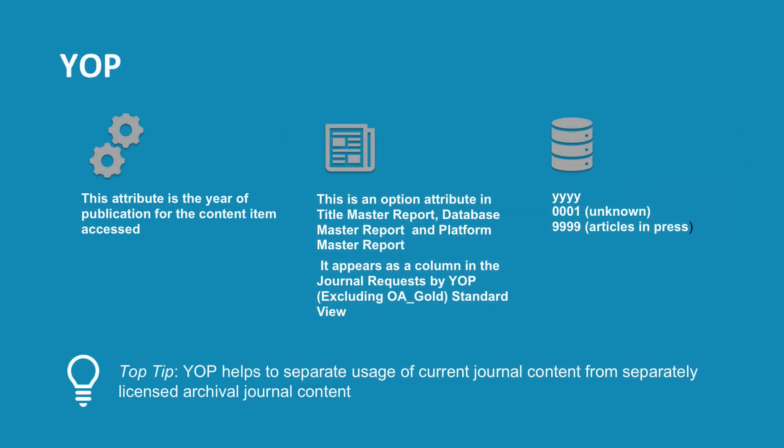YOP is the acronym for the attribute Year of Publication, and it indicates the year of publication for the content item accessed. YOP is an optional attribute in the Title Master Report, the Database Master Report, and the Platform Master Report, and it appears as a column in the journal requests by year of publication, excluding Gold OA standard view. When it is known, YOP will be expressed as the year of publication in a four-figure format, for example 2018. If the year of publication is not known, it will be displayed as 0001.